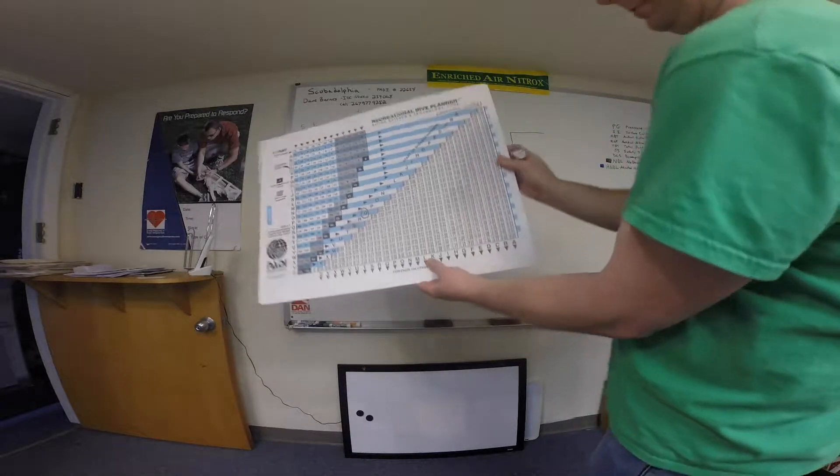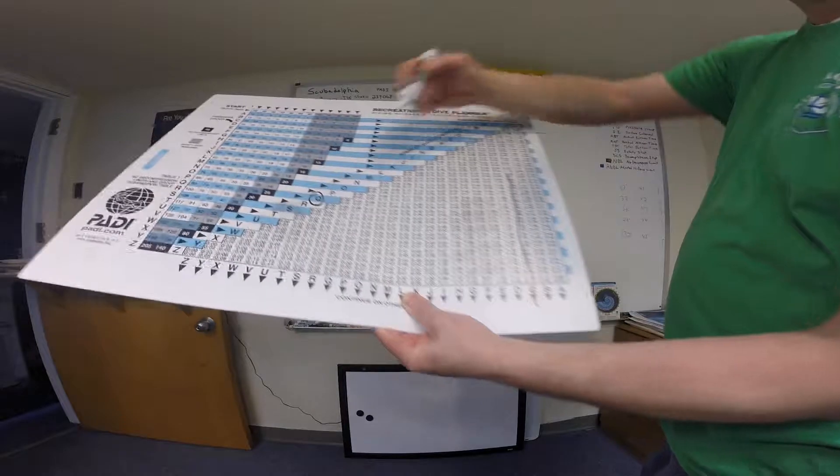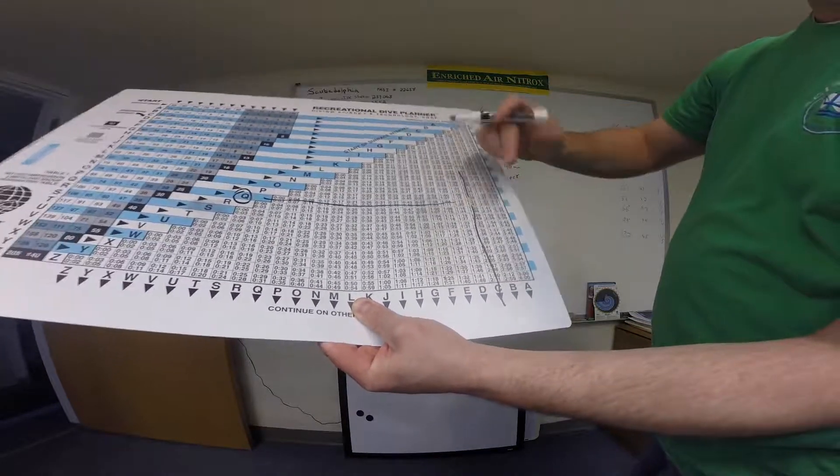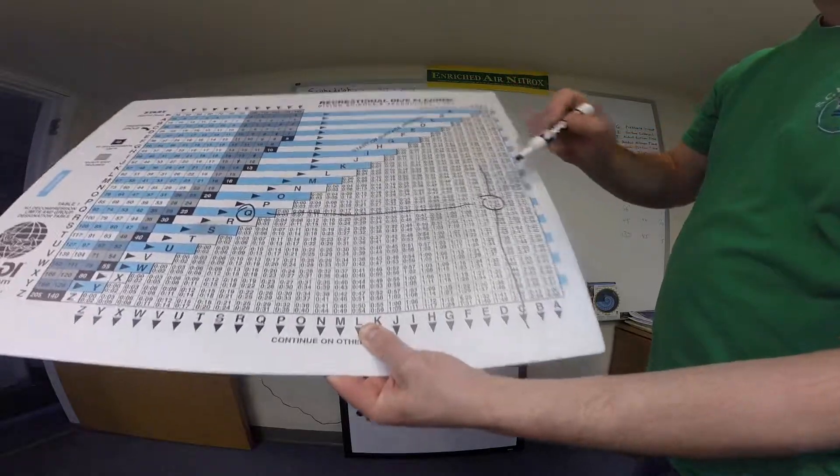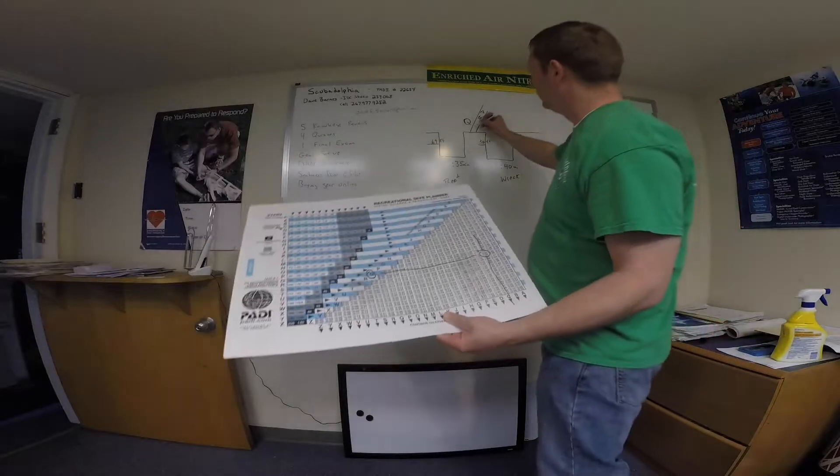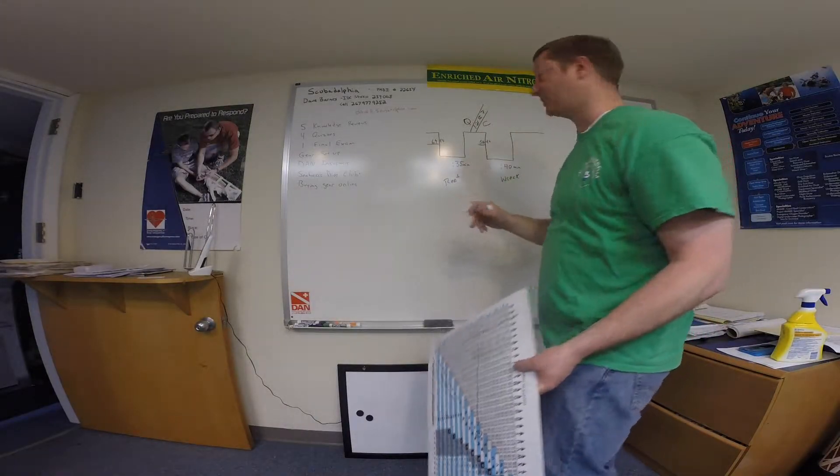So flip back to your front table and we're a C coming from the bottom here. Let's come up this way. Q coming across this way where they meet. We're going to see that we are between one hour, 21 minutes and one hour, 42 minutes. The minimum service interval is one hour, 21 minutes that we need to stay out to do these two dives safely.